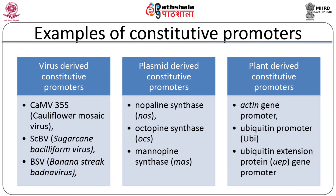The third category is plant-derived constitutive promoters. Genome sequencing of various plants enables us to find out promoter sequences in plants. Generally, these include housekeeping genes such as actin and ubiquitin gene promoters. These genes show high levels of expression in plant tissues and their sequences are conserved. Examples include rice actin gene, ubiquitin promoter from maize and Arabidopsis, and ubiquitin extension protein genes isolated from yeast and several plants including tomato, barley, and potato. Advantages include high-level expression in all tissues and ease of detection via selectable marker genes. Limitations include less effectiveness in monocotyledons and potential horizontal transfer raising biosafety issues.